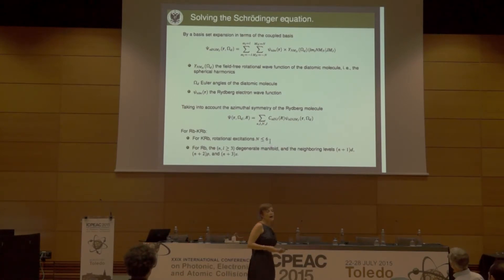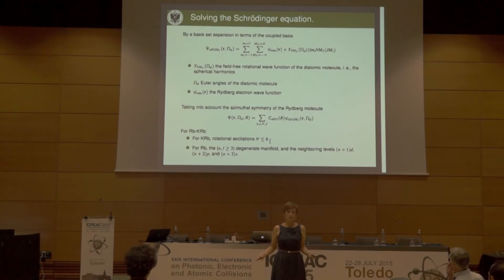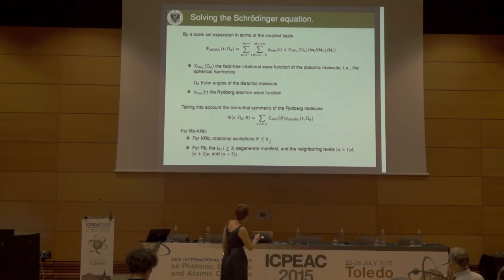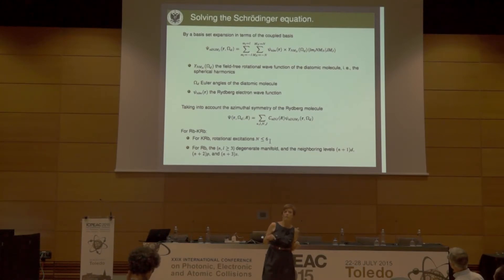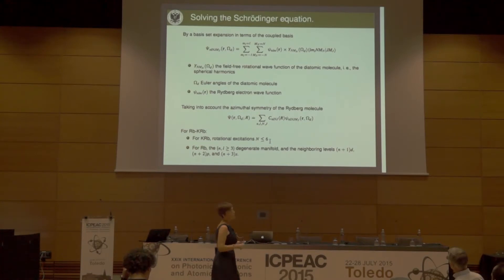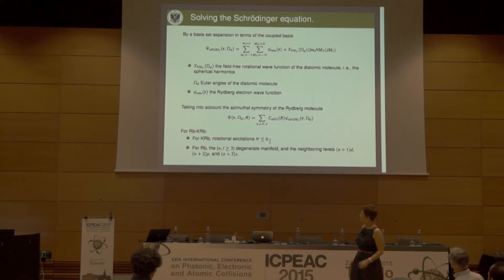To solve it, I go to the Kappel basis system, where I have the Rydberg electron wave function and spherical harmonics representing the field-free rotational motion of the diatomic molecule. I do this basis expansion. For KRb, I include rotational excitations up to N equals 6 for the diatomic molecule. For rubidium, I include the degenerate manifold and three neighboring non-degenerate manifolds: N+1 D, N+2 P, and N+3 S.